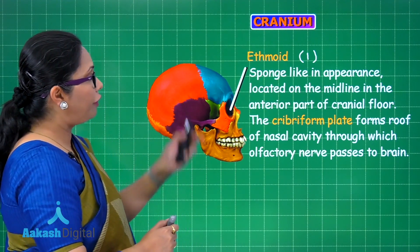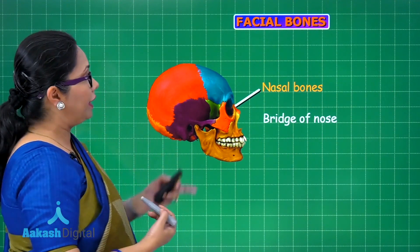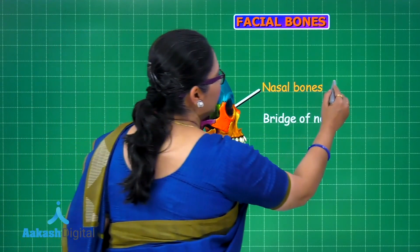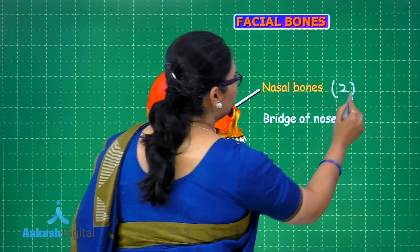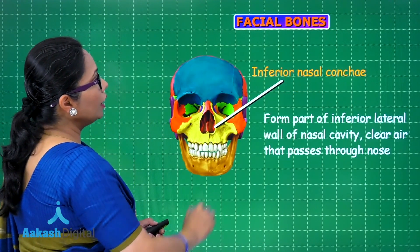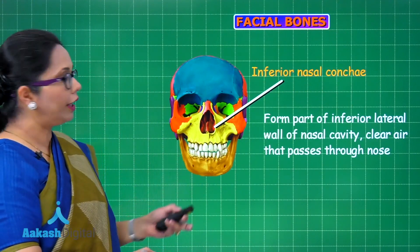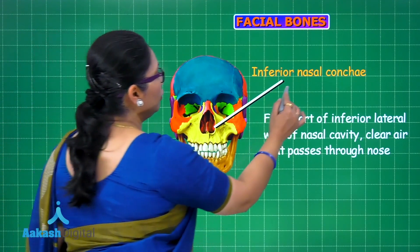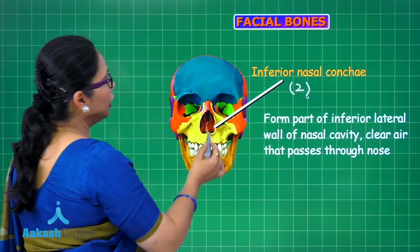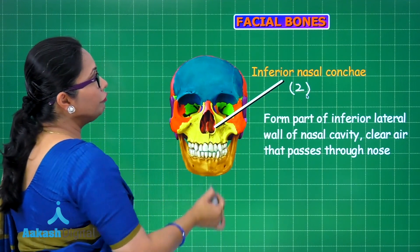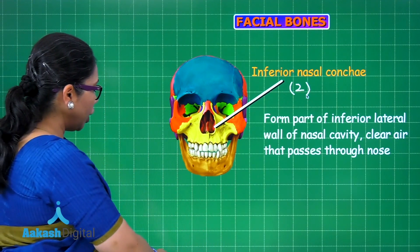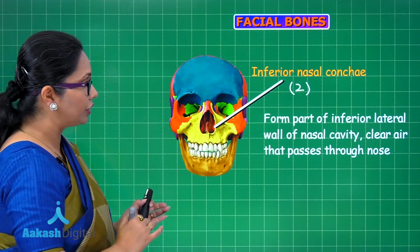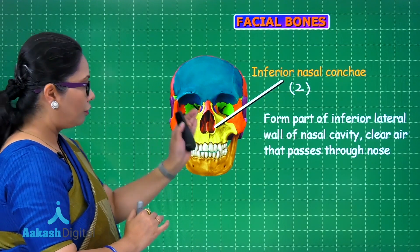Moving on to the facial bones which make up the face: the nasal bones are paired, forming the bridge of the nose. The inferior nasal conchae (also called infranasals or turbinates, which we have also studied with the respiratory system) are also paired bones, forming the inferior nasal conchae inside the wall of the nasal cavity.